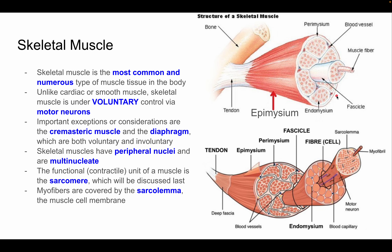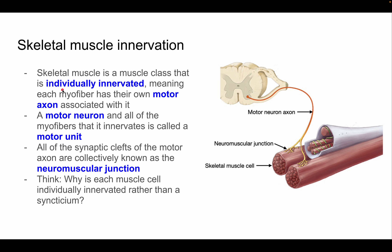Skeletal muscle is individually innervated — each myofiber has its own motor axon. A motor neuron and all the myofibers it innervates is called a motor unit. The synapse between the motor axon and the muscle cell has a synaptic cleft between the presynaptic and postsynaptic membranes. All the synaptic clefts of a motor unit's axon are collectively known as the neuromuscular junction.